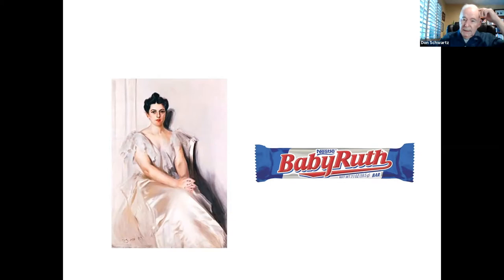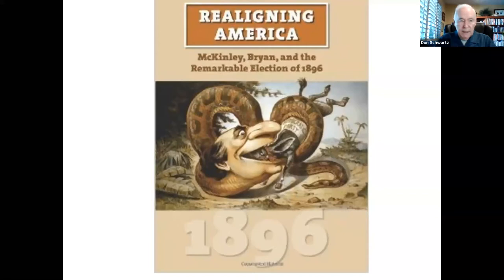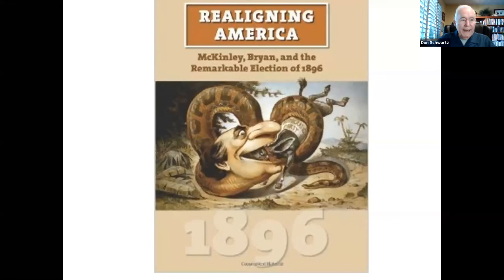Now let's move to the election of 1896, one of the most dramatic and complex presidential elections in U.S. history. It is seen as the beginning of a new era in American politics and was referred to as the realignment election. Ever since the election of 1800, American presidential contests had, on some level, been a referendum on whether the country should be governed by agrarian interests or industrial interests. This was the last election in which a candidate tried to win the White House by winning the farm vote.